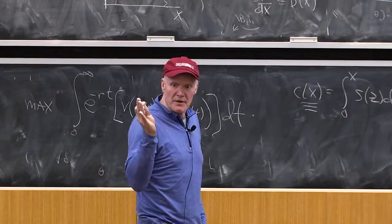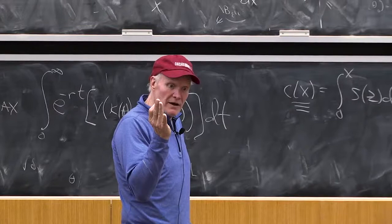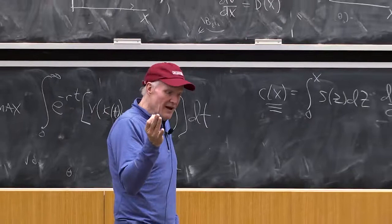And since I could make k dot go up or I could make k dot go down, the derivative with respect to k dot better be 0 at every date. Because if the derivative with respect to k dot is positive, then I should increase k dot. If the derivative with respect to k dot is negative, I should reduce k dot. Of course, taking account of the fact that changing k dot changes k.